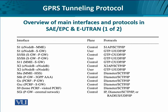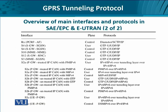Let's look at the interfaces which use GTP. We have the S5 and S8 interfaces which use GTP-C and GTP-U over UDP over IP. Then we have the X2 interface, which is inter-eNodeB user traffic. Then we have the S4 interface, which also implements GTP. We also have the S2B interface that uses GTP.